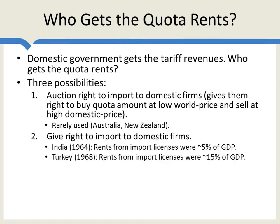In fact, Ann Krueger in 1974 calculated that in India the rents from the import licenses were around 5% of GDP, and in Turkey the rents from the import licenses were about 15% of GDP — really big numbers.